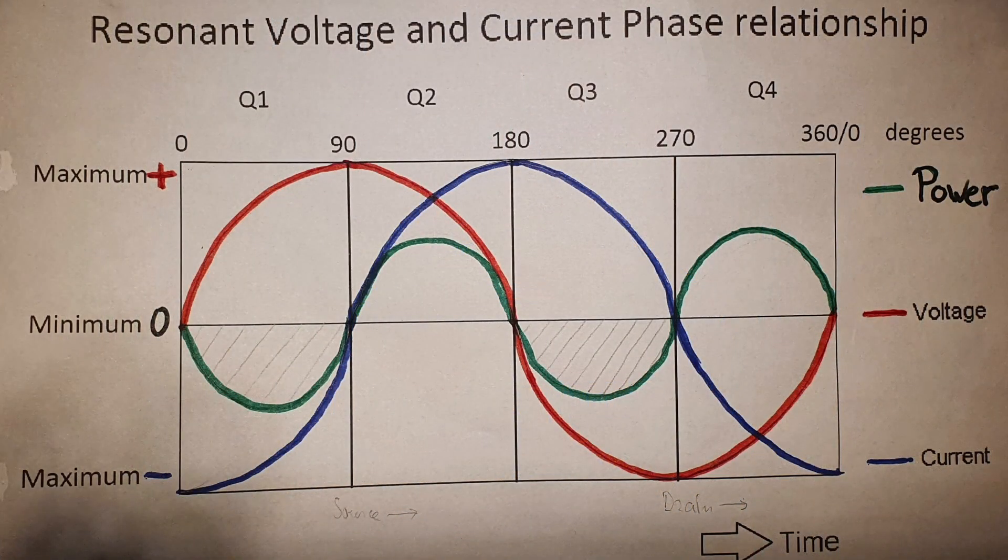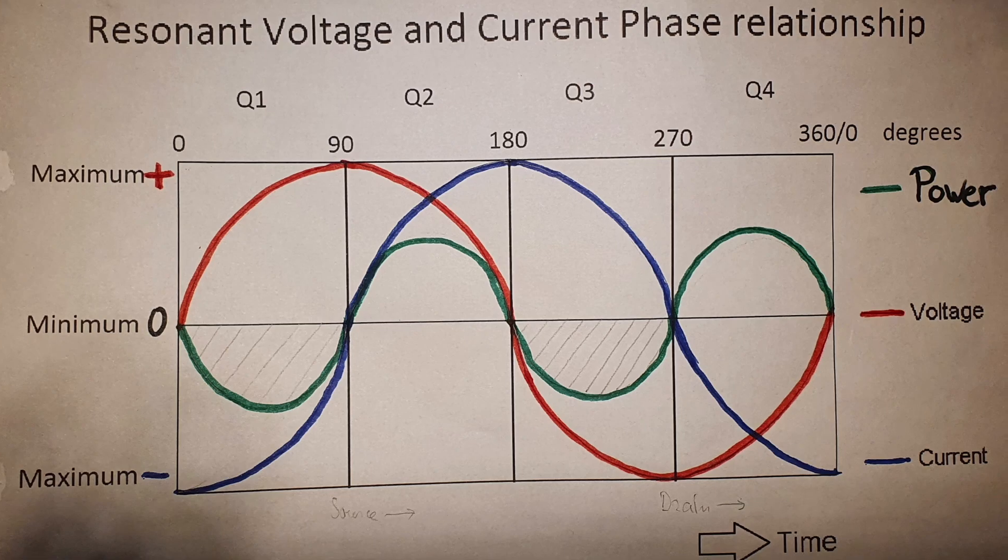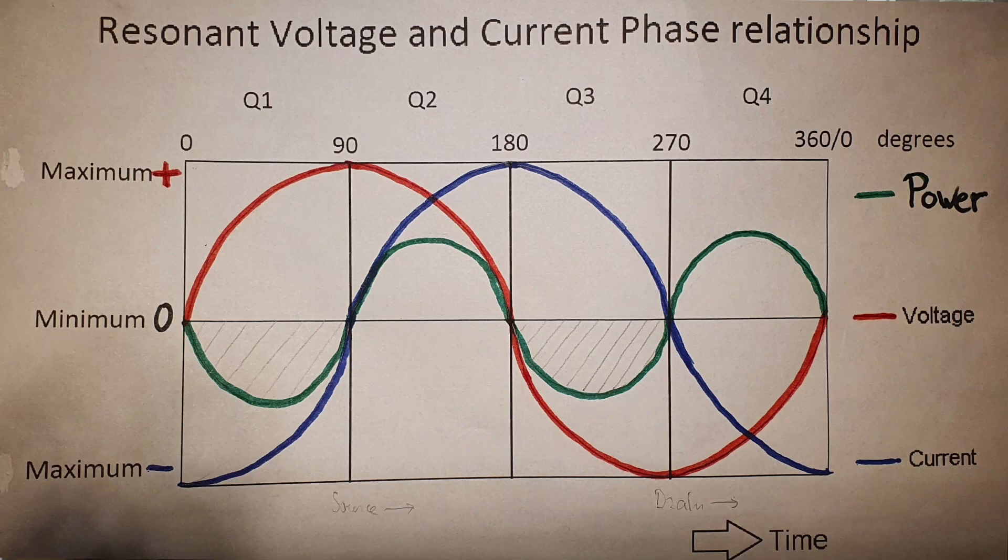Now let's look at the resonant sine waves of current and voltage again — where voltage and current are 90 degrees out of phase. At the maximum of one, the other is always zero. But in between the maximums there is always power because both voltage and current are present. However, there is a positive and a negative power from the coil charge and the capacitor charge, which results in zero resultant power because positive and negative power are equal in size. They cancel each other out. There is no real power in resonance.